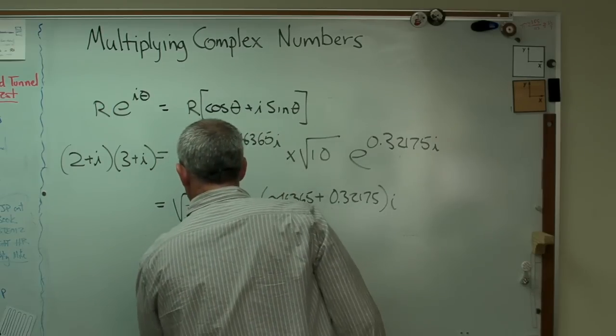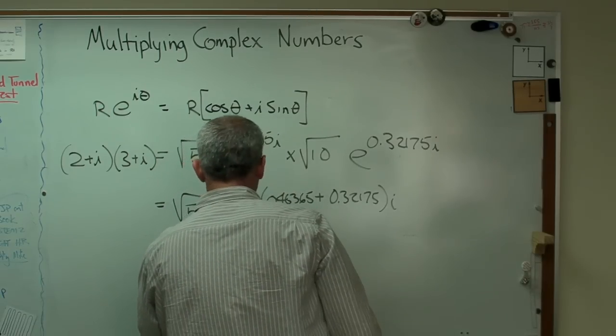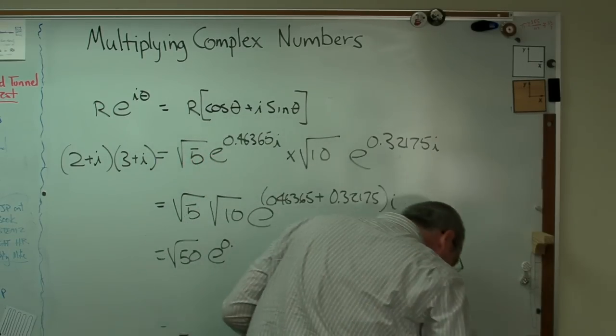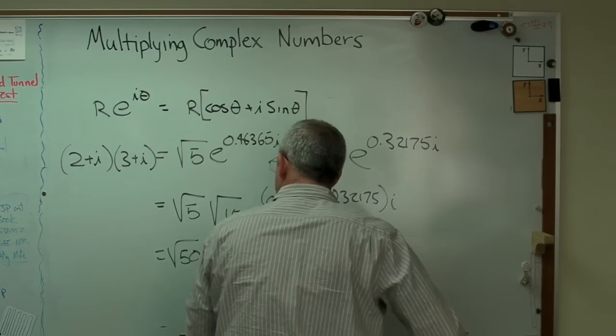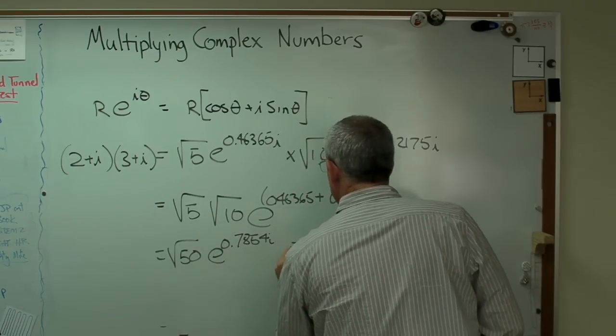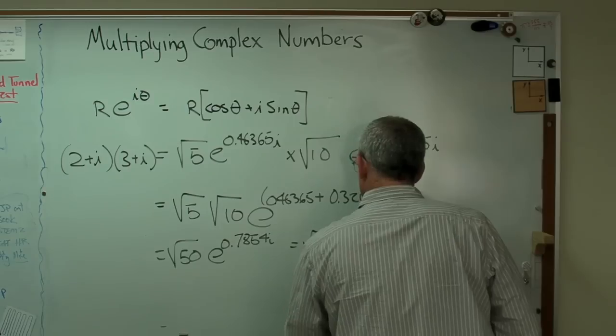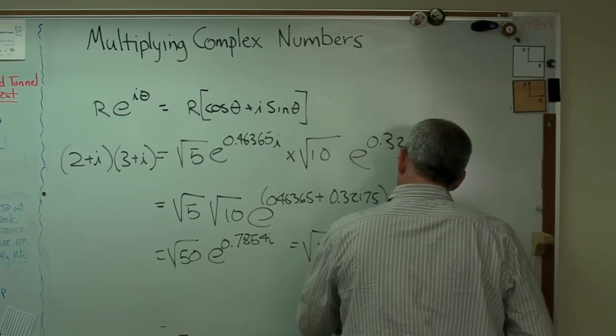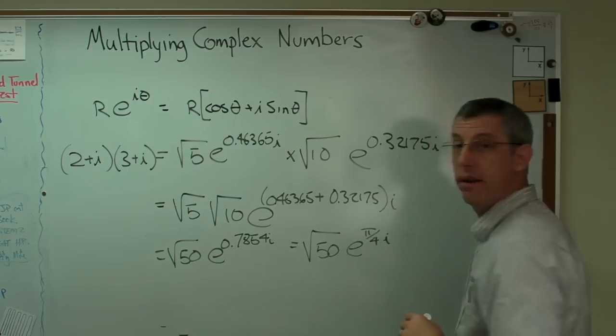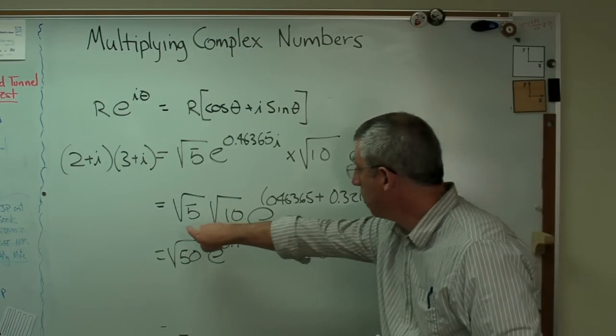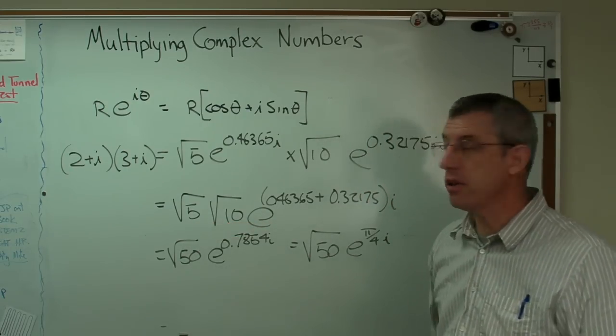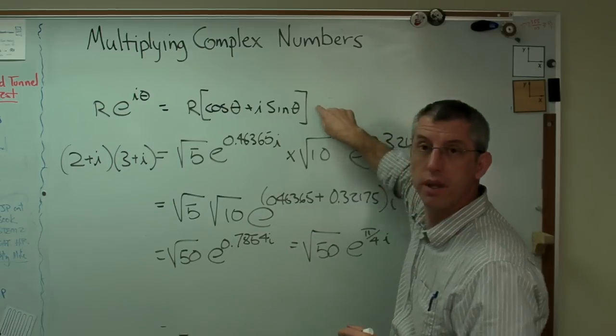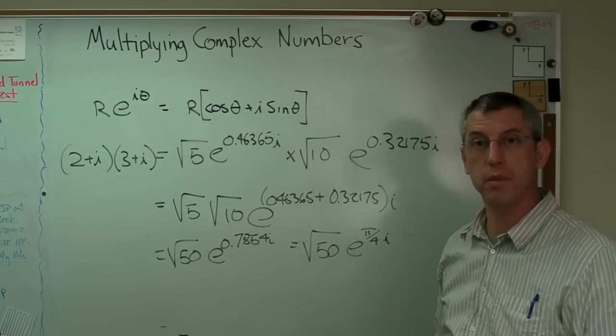Well, son of a gun. That's going to be square root of 50 times e to the 0.7854i. And that is square root of 50, e to the pi over 4i. There you go. So I'm able to multiply the two radii and add the angles. This is why this works. The Euler relation is what makes it possible. Hope this helps, and I'll see you next time.